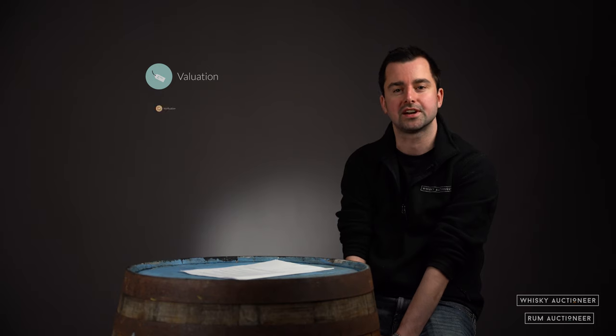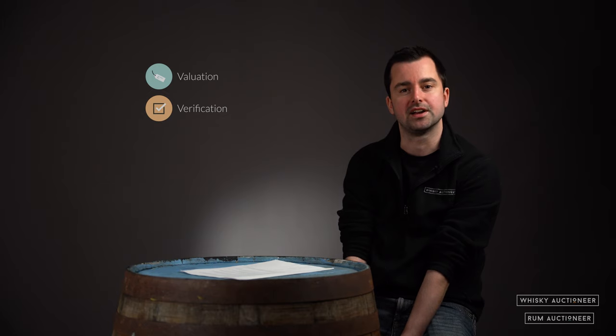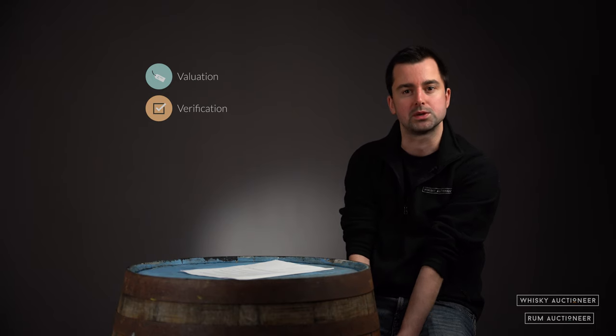Second stage is verification. We will ask you for proof of ownership as well as information on the location of the cask, details of storage fees, and any insurance charges which will then become the responsibility of the new buyer.